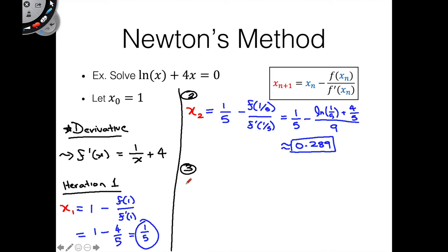Which is going to be defined x_3. And this is the last one we'll do, just keeping time in mind. So x_3, now we're going to plug in x_2, which is 0.289, minus f(0.289), over f'(0.289).